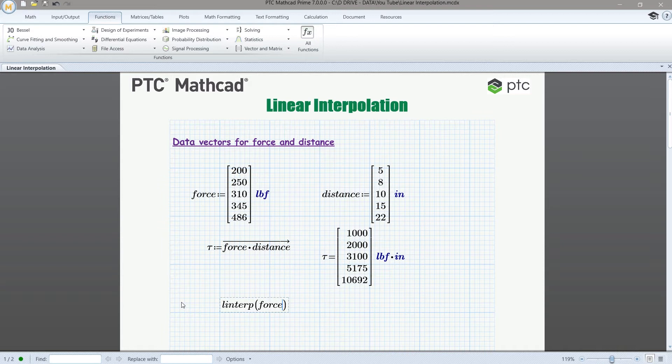The second input is going to be the y-data. Our y-data is our torque values. So we need a comma and then tau for torque because we're going to interpolate values of torque for any given input of force. And then our third input here is going to be an independent variable x. And that is going to represent the value of force at which we want to do the interpolation.